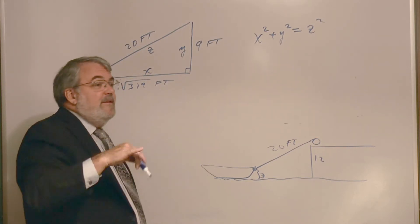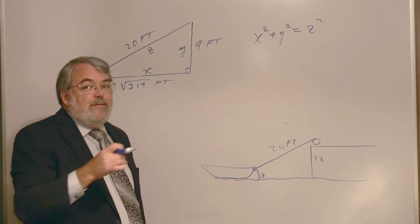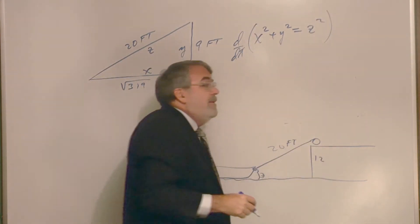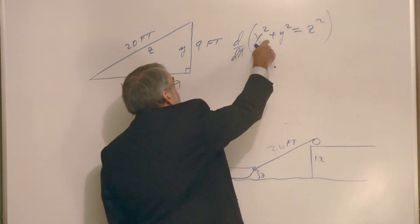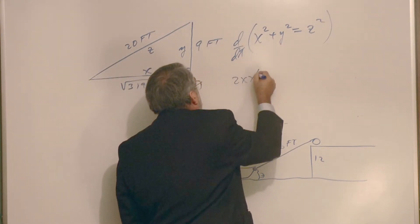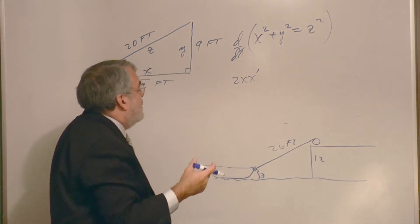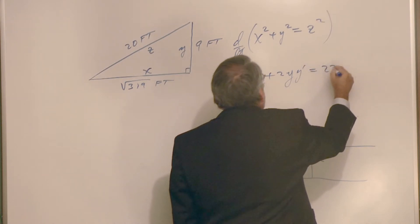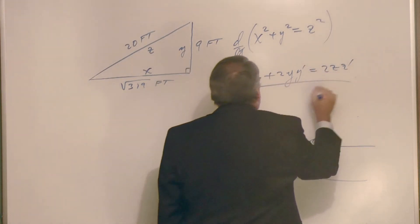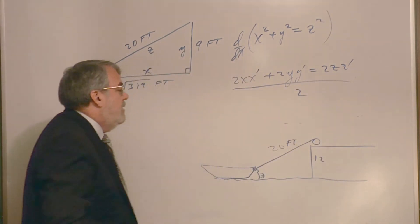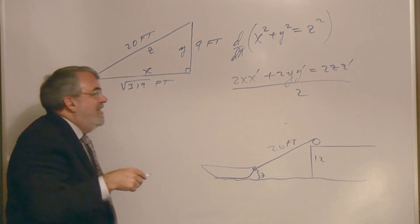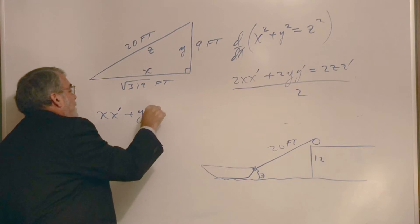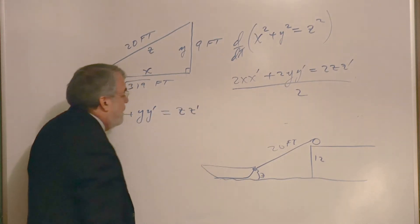And if I take the derivative with respect to time, I'll get the rate of change with respect to time or the speed of each part of this. So I'll take the derivative with respect to time. I'll get 2x, x prime. That's an implicit derivative application. Plus 2y, y prime equals to 2z, z prime. If you divide it by 2, then we have the, I call it the speed version of the Pythagorean theorem, x, x prime plus y, y prime equals to z, z prime.